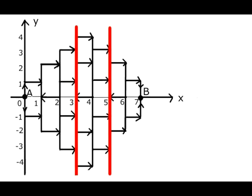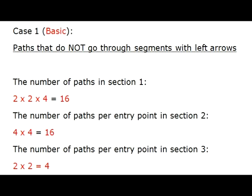So, to count the number of different paths for case number 1 in each section, we must count the number of right arrows the bug can choose from for each integer point on x-axis and multiply these numbers. We can simply count these numbers while looking at the map. For the first section there are 2, 2, and 4. For the second section there are 4 and 4. And for the third section there are 2 and 2.